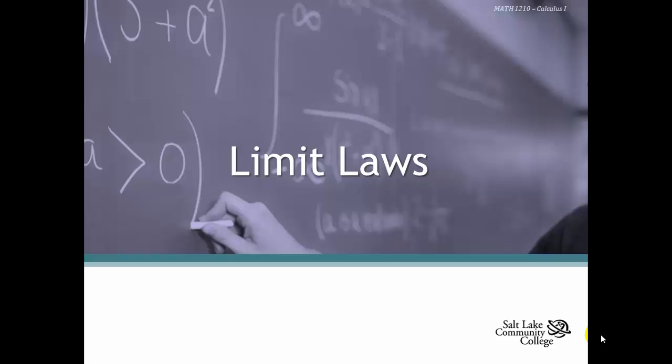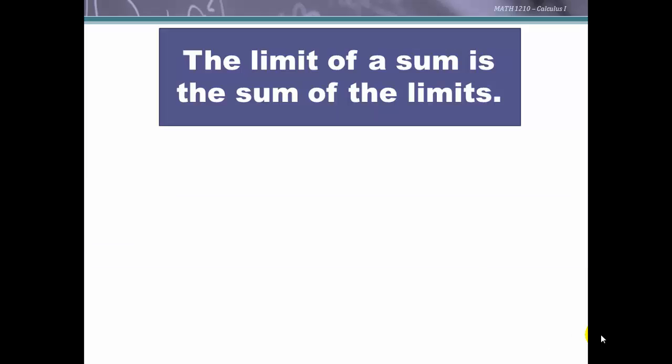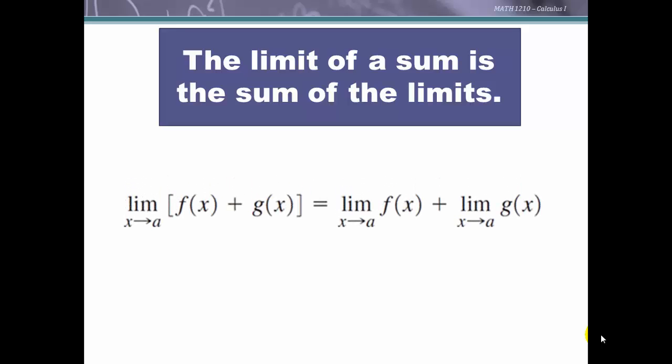We're going to talk about limit laws, which help us find the limits of various functions when they're composed of other functions, either with sums or compositions. The first is that the limit of a sum is the sum of the limits — you can add two functions together and then find the limit, or find each limit separately and then add. I sometimes call these the 'now and later' properties.